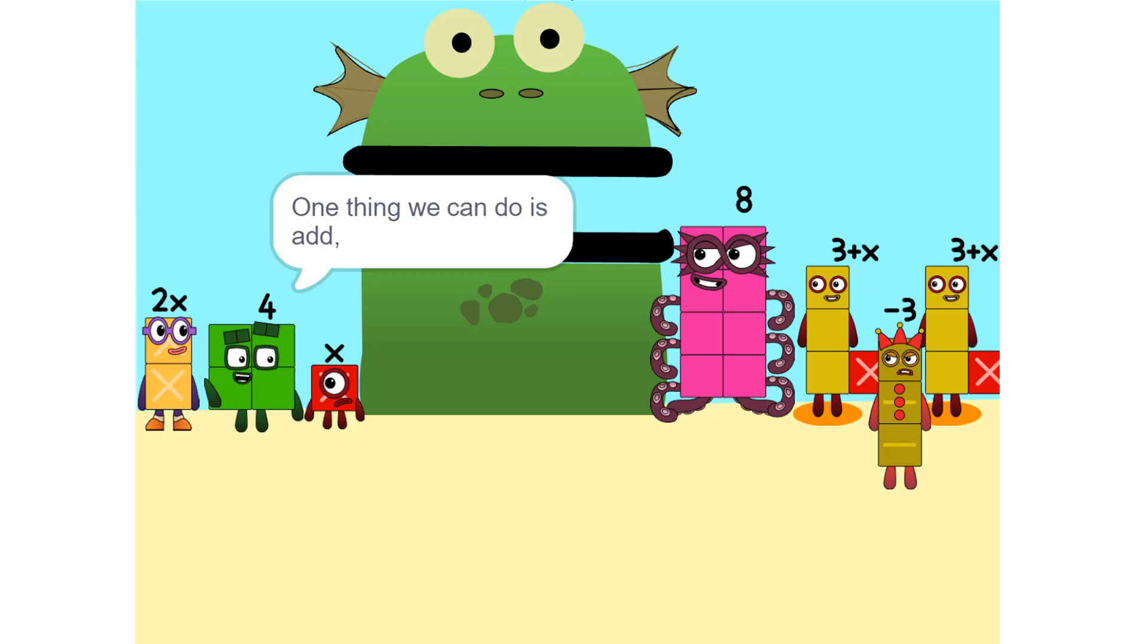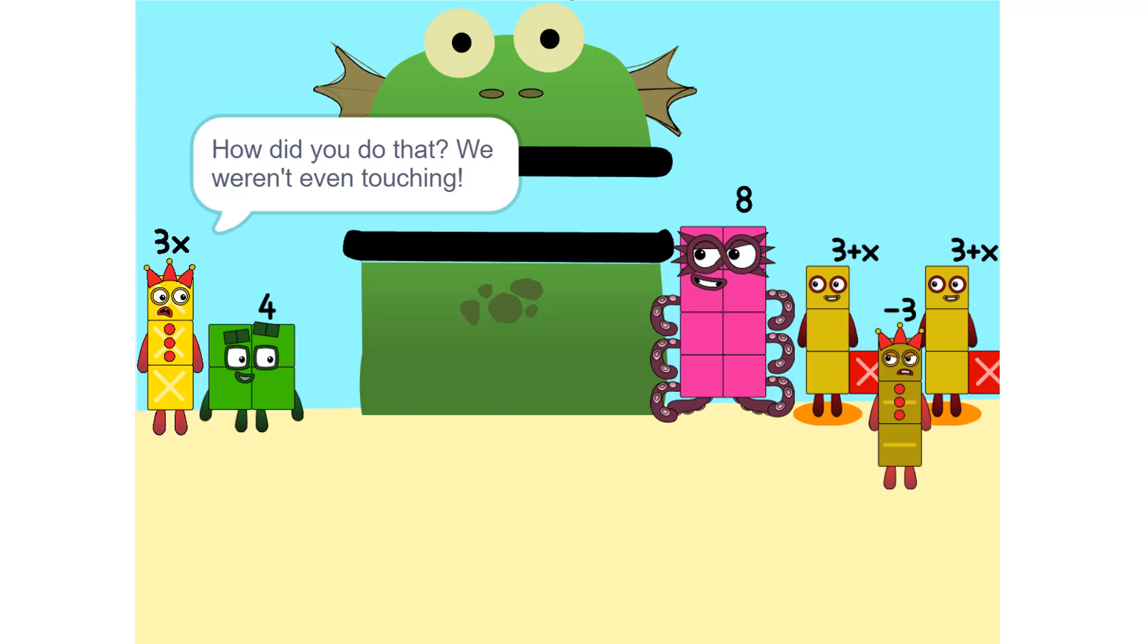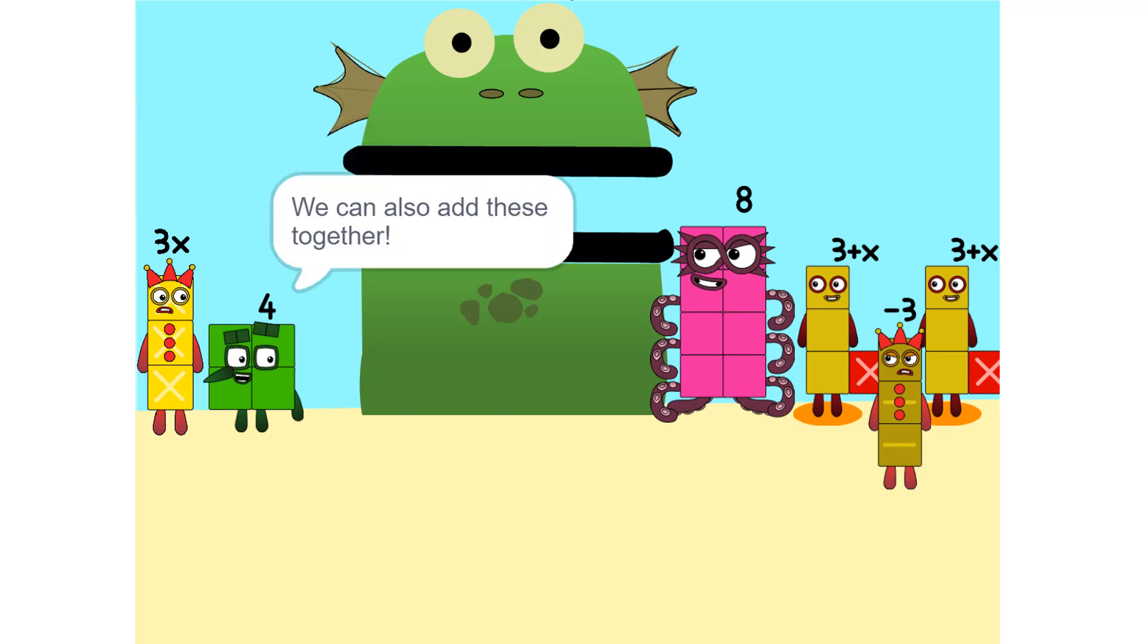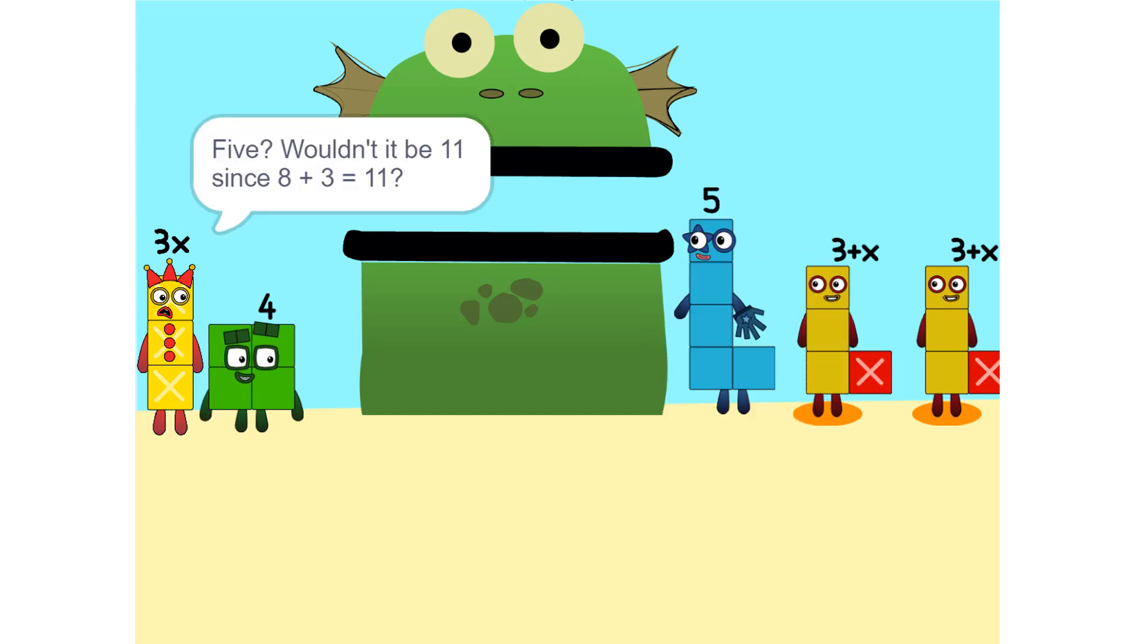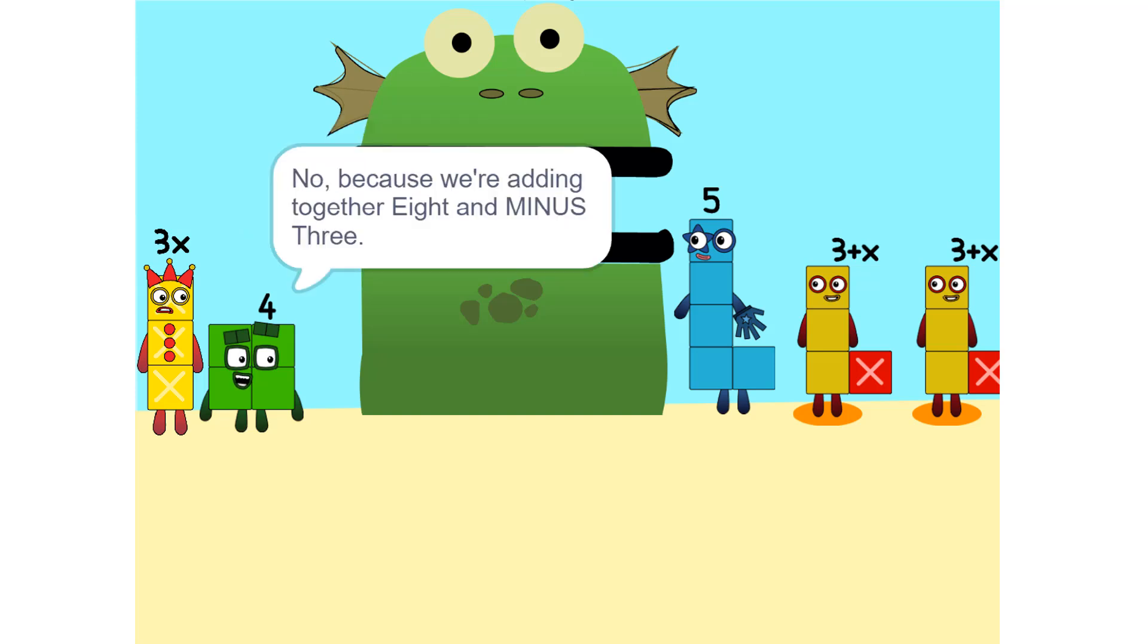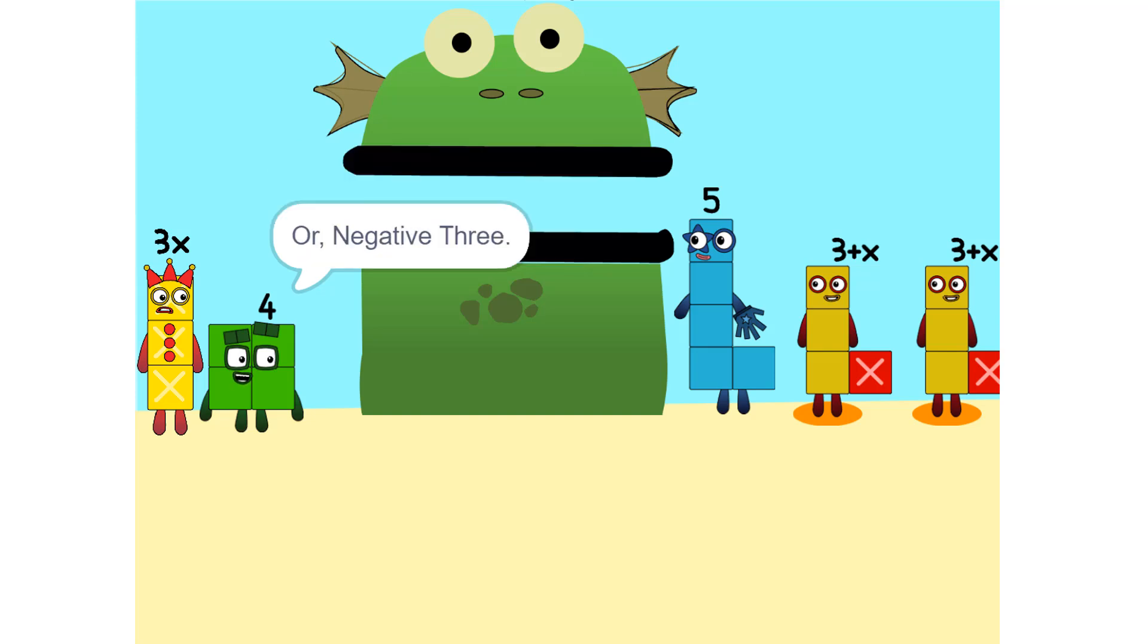One thing we can do is add these two together. How did you do that? We weren't even touching. They don't have to be. Would we do it if we were touching? Yeah. We can also add these together. 5. Wouldn't it be 11 since 8 plus 3 is 11? No. Because we're adding together 8 and minus 3, or negative 3. So it's 5.